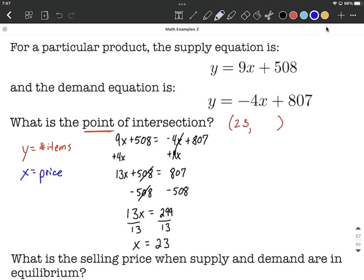If we substitute it into the supply equation, our y value would be looking like this: 9 times 23 plus 508, which works out to be y equals, we'll multiply first, so 207 plus 508. Our y value is going to be 715.